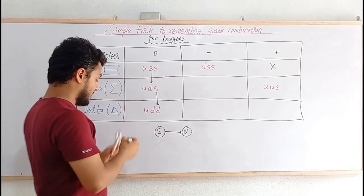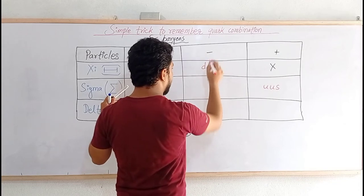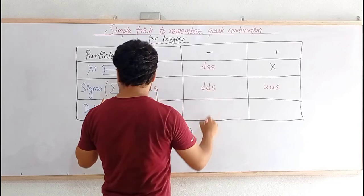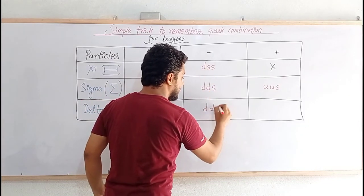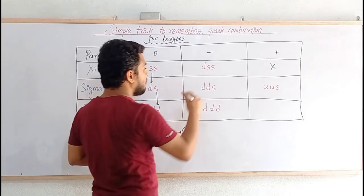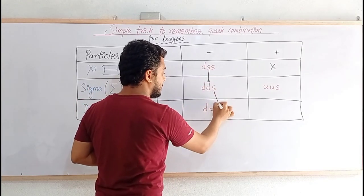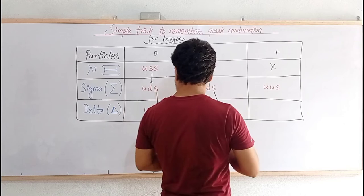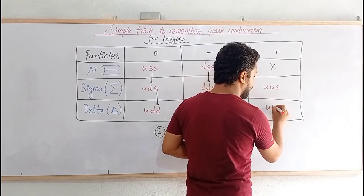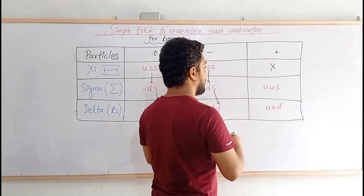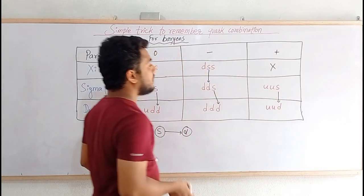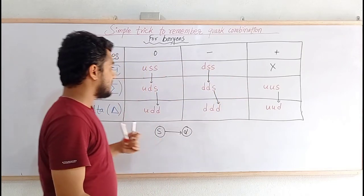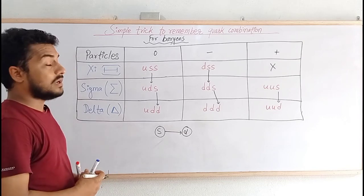Similarly, the quark combination for sigma-minus will be D, D, S. And delta-minus will be D, D, D, because we can change only one S at a time. So we have changed one S at a time to complete the table. For delta-plus, it goes U, U, D, because there is only one S, and if we change this S it forms D. And we don't have any quark combination for xi-plus. This is the simple trick for baryons to remember the quark combination.